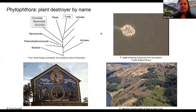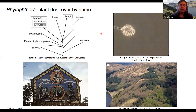Phytophthora is a genus within the Oomycetes — sometimes they're compared to fungi but they're not true fungi; they are in the Chromista, so they're more closely related to brown algae. Phytophthora literally means 'plant destroyer' and most of the species are pathogenic. The most famous one is Phytophthora infestans, which causes potato blight, but you've also heard of Phytophthora ramorum, sometimes called sudden oak death, which has caused the death of millions of trees in California and Oregon and is now making it very difficult to grow larch in the UK.